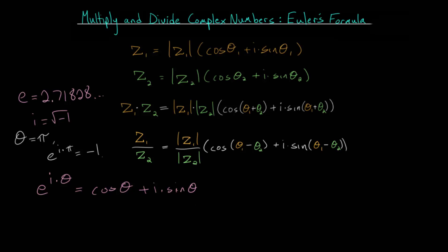The sine of pi is zero, so e to the i pi is equal to negative one. Typically this is written as e to the i times pi plus one is equal to zero. This is one of the most famous equations in all of mathematics, since it relates what could be argued as the five most important constants in math: e, i, pi, one, and zero.